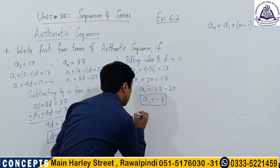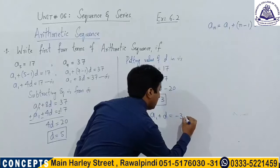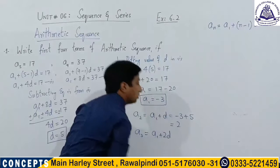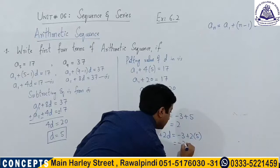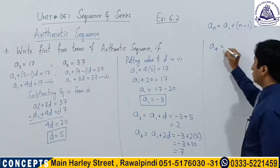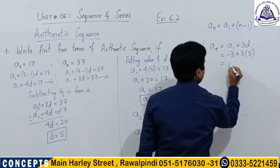a2 = a1 + d = −3 + 5 = 2. a3 = a1 + 2d = −3 + 2·5 = −3 + 10 = 7. a4 = a1 + 3d = −3 + 3·5 = −3 + 15 = 12.